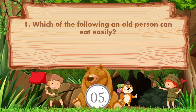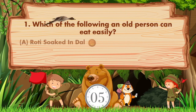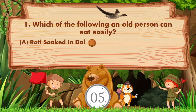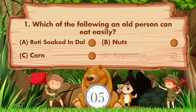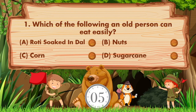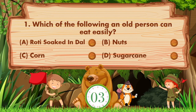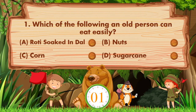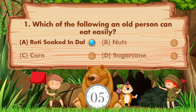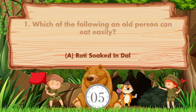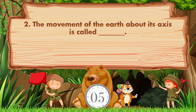Which of the following can an old person eat easily? Option A: roti soaked in dal, B: nuts, C: corn, D: sugarcane. Answer is option A, roti soaked in dal.